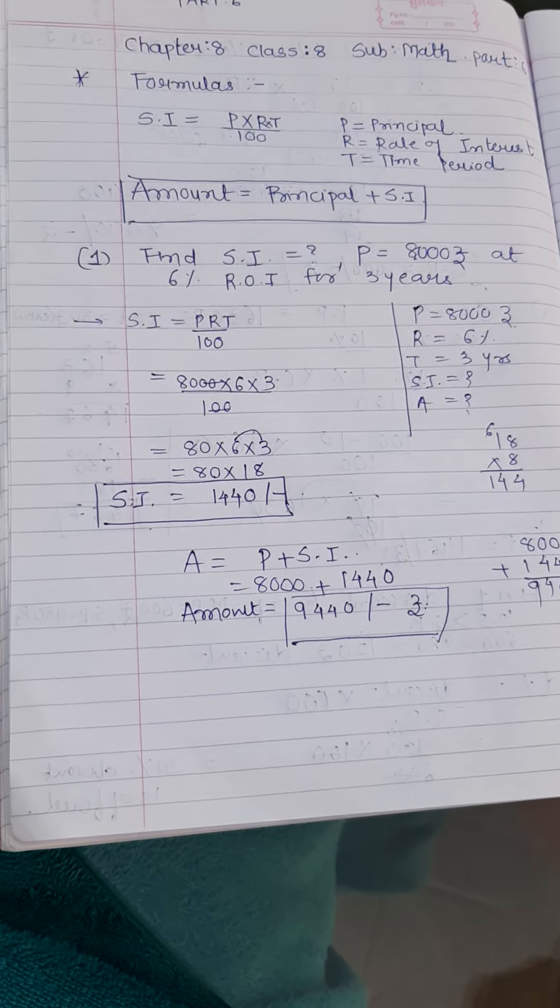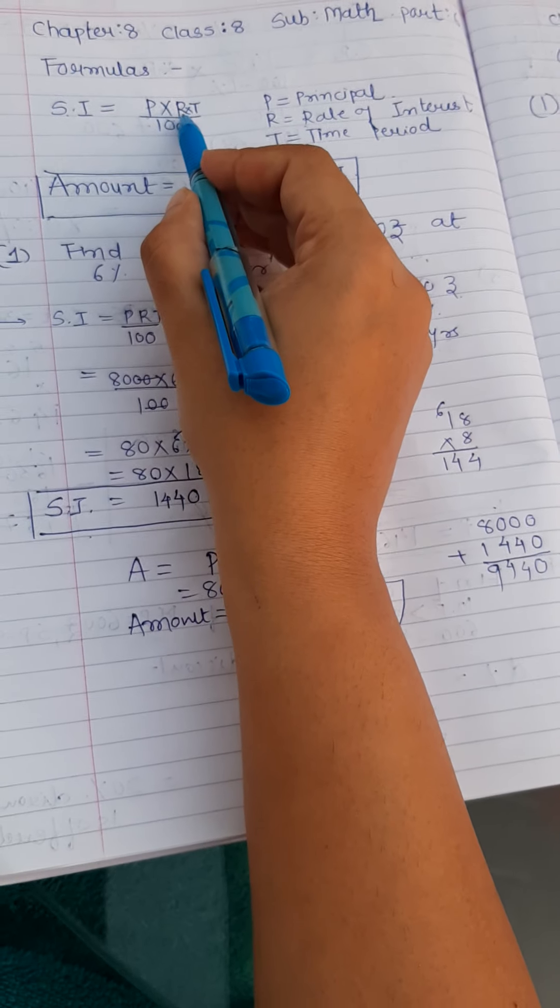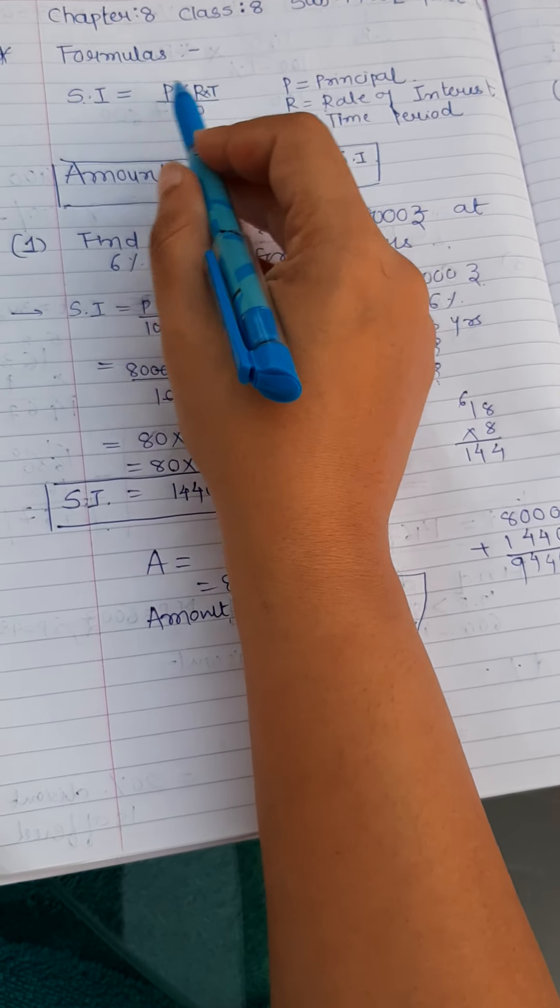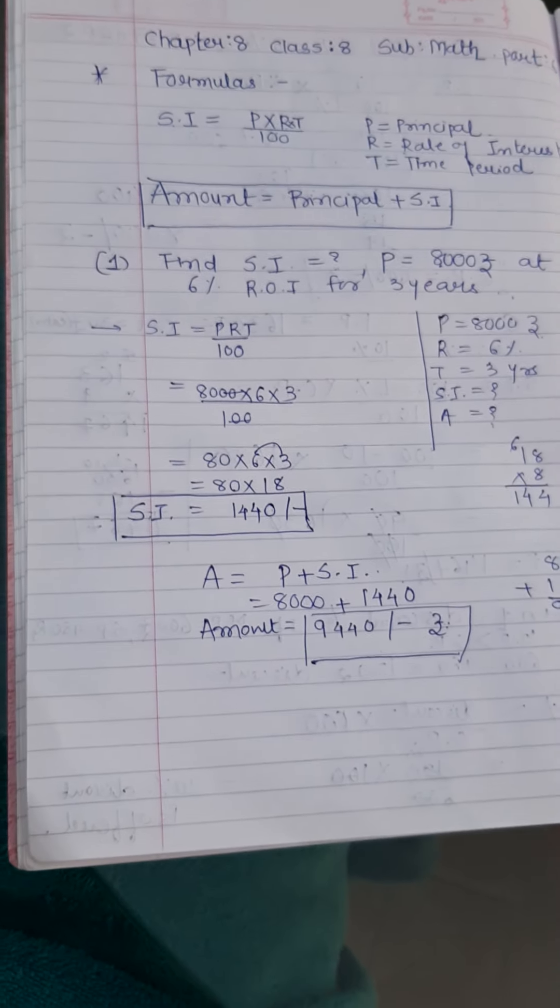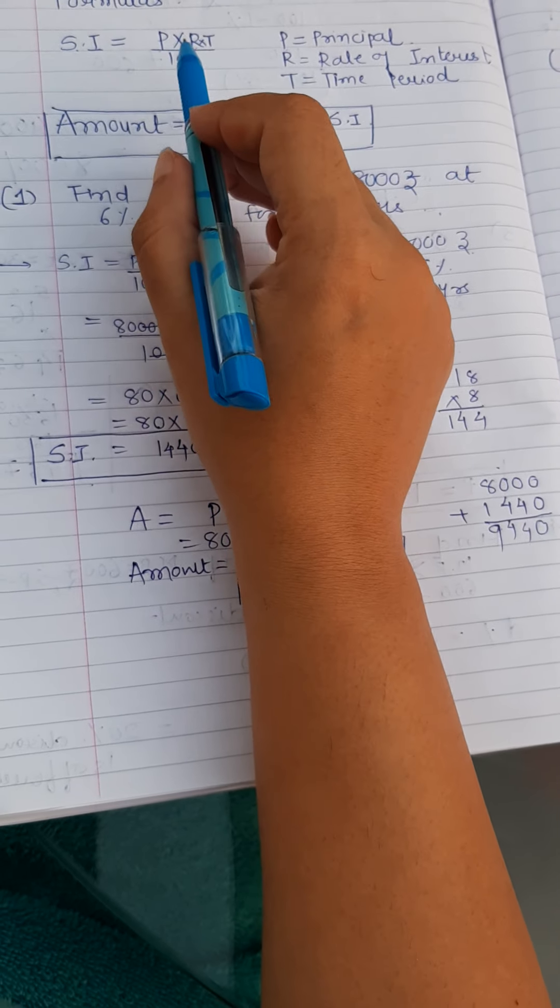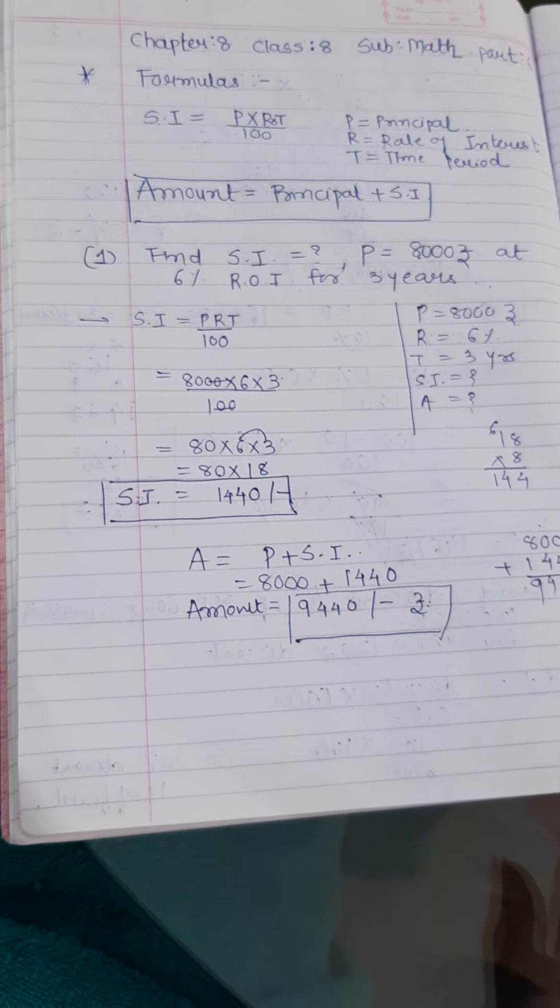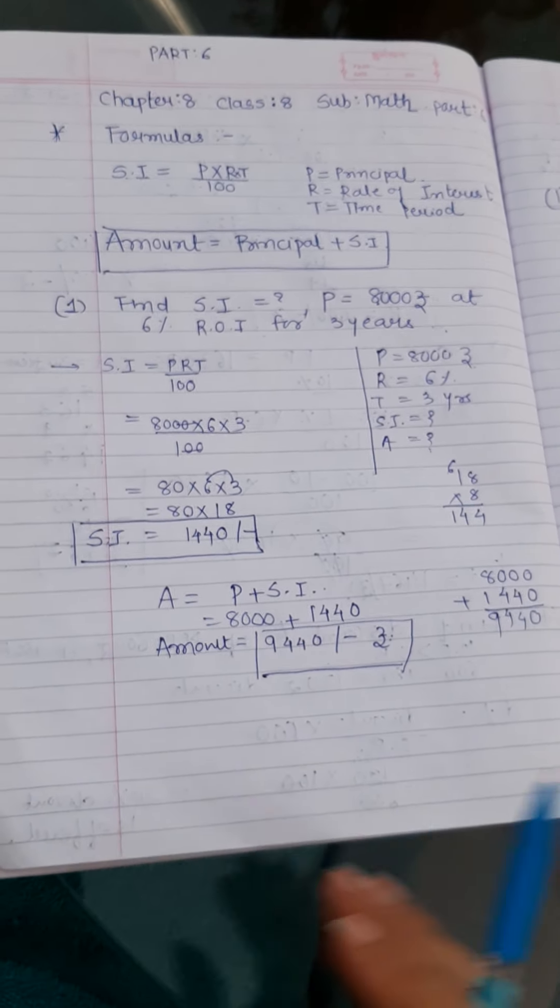Now if they ask, they have given you simple interest and they say find P, find R, find T, so you just make them subject. Suppose they have given you all of them and not rate of interest. So make rate of interest as subject and all the values you put, and you will find the different values.